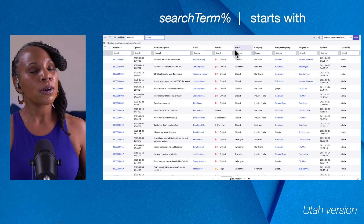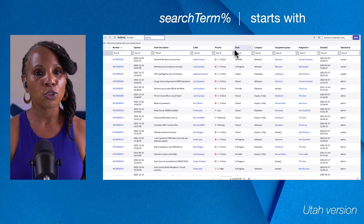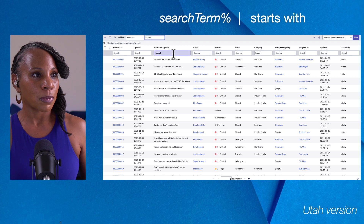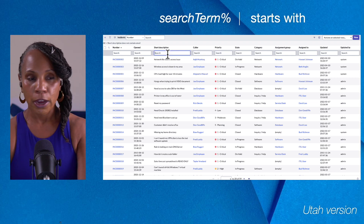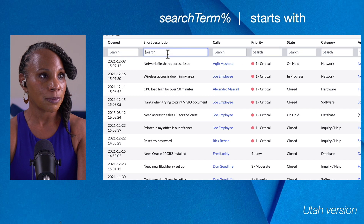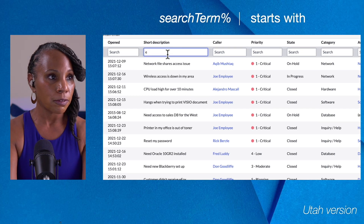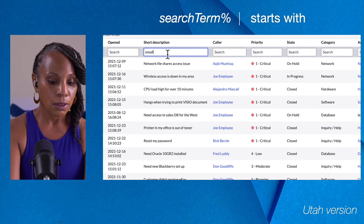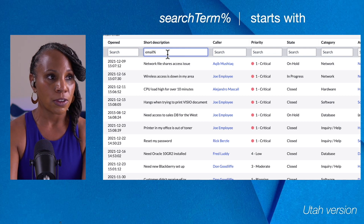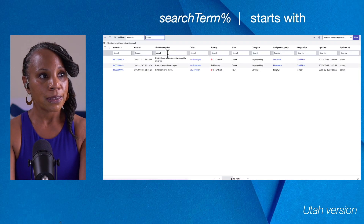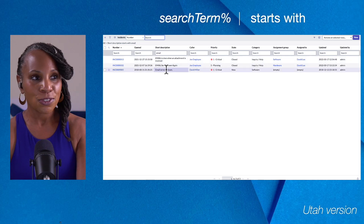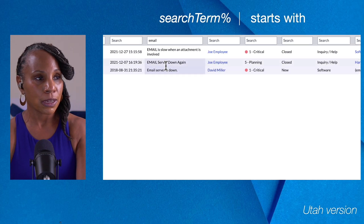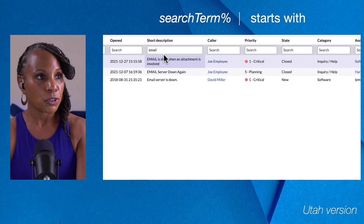Next, we'll look for records whose Short Description starts with 'email'. We'll go back to that search area under Short Description — let's zoom in a bit — and type the word 'email' followed by the percentage sign. We'll hit Enter, and as you can see, each of the short descriptions begins with the word email.